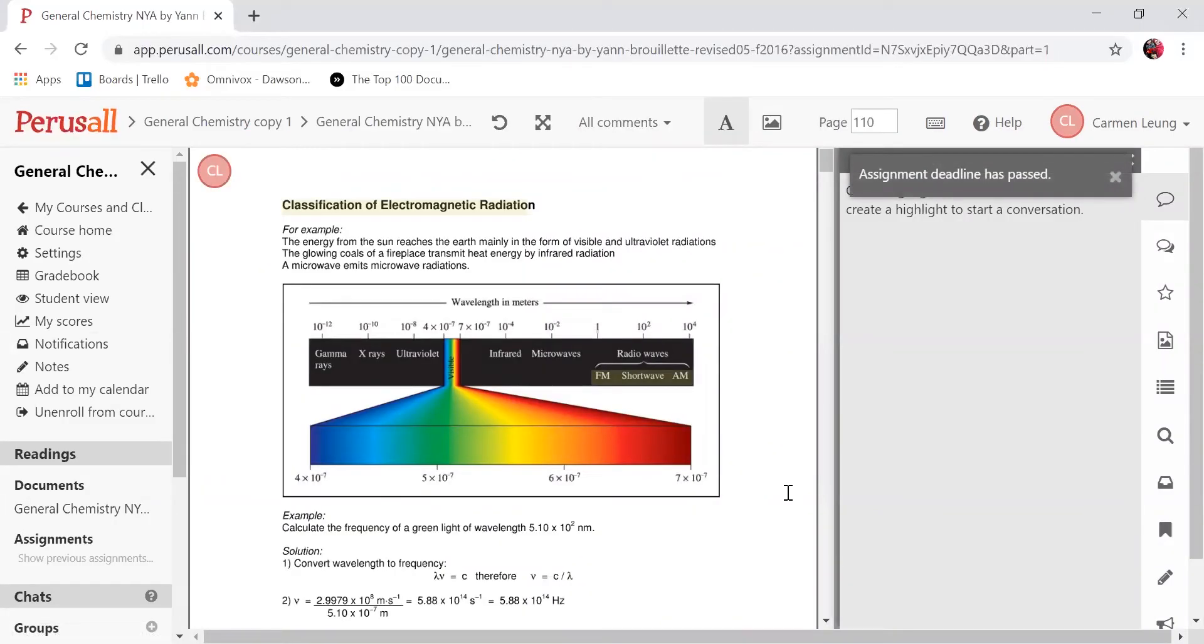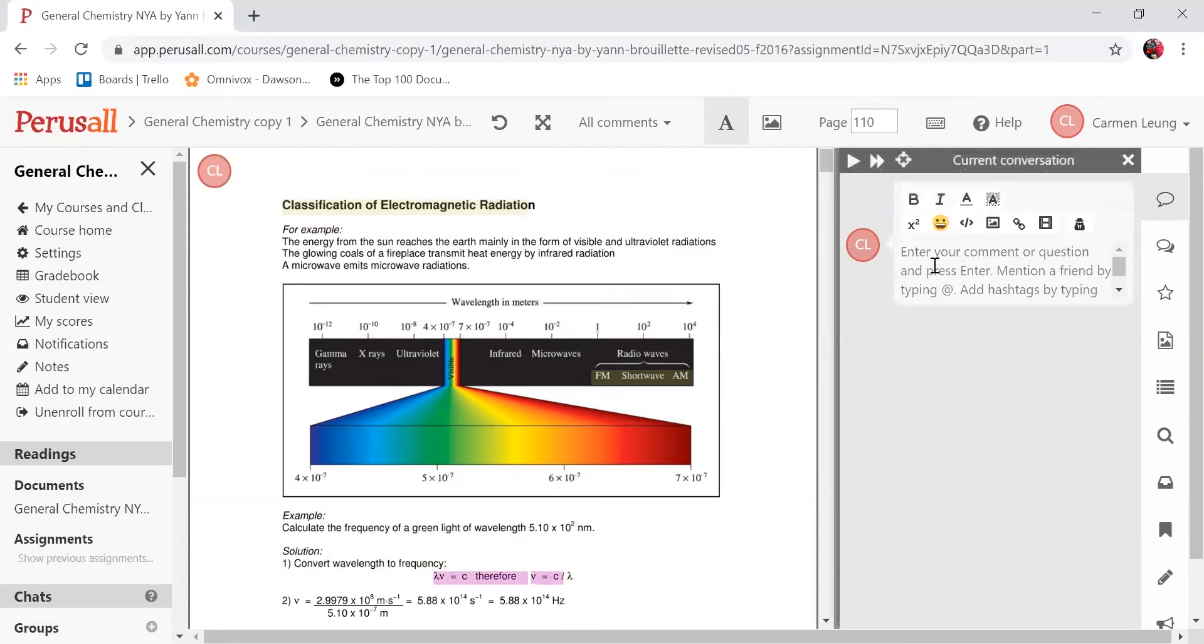When a student would like to add an annotation, they can highlight any part of the text and then add their question or comment. They can also annotate an image—just have to choose the right icon, then highlight the area of interest and add their comment or question.